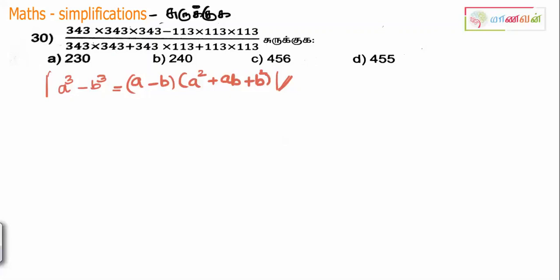Now we will talk about 343 into 343 into 343 — that is, 343 cubed. This is A into A into A, which is A cubed. We will talk about minus 113 into 113 into 113. What is the basic formula? A cube minus B cube — this is the formula.